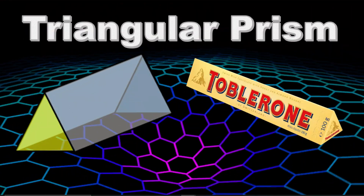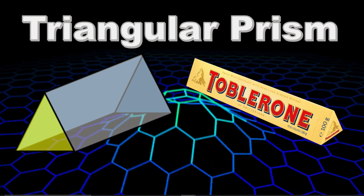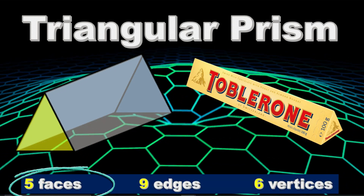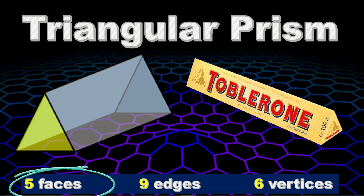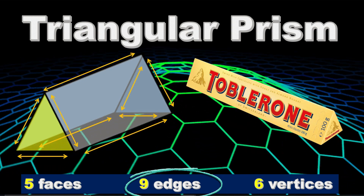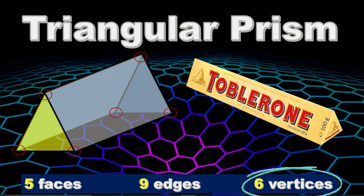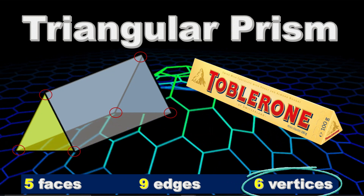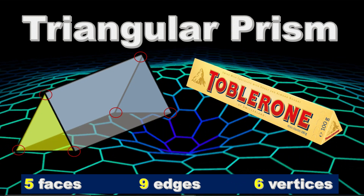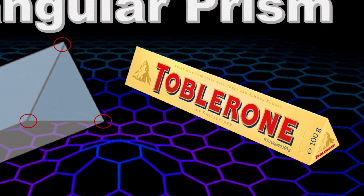Triangular Prism. Triangular Prism has five faces, nine edges, and six vertices. An example of Triangular Prism is the backs of Toblerone.